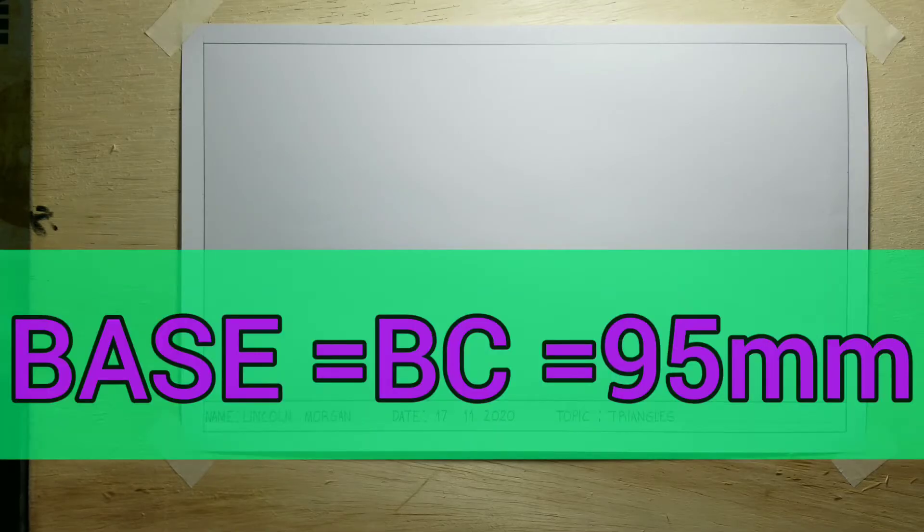I will now construct my triangle ABC given the base and the base angles. The length of the base is 95 millimeters and the base will be labeled BC.